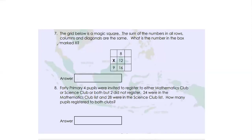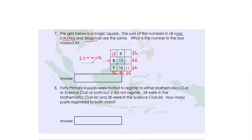Let's read question number 7. The grid below is a magic square where the sum of numbers in all rows, columns and diagonals are the same. What is the number in the box marked X? Looking at the given values — you have 20, and the sum has to be 36. Since 9 plus 16 equals 25, you need 11 to make 36. Then diagonally: 12 plus 11 equals 23, and 36 minus 23 equals 13. Now in that row: 13 plus 9 plus x equals 36, so 22 plus x equals 36, therefore x equals 14.